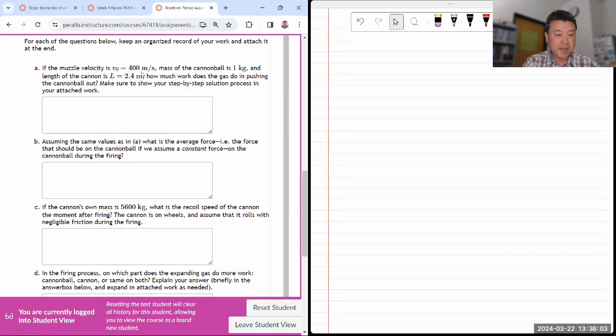If the muzzle velocity is V-naught, mass is M, length is L, how much work does the gas do in pushing the cannonball out? Here, I think you have to recognize that length is actually redundant or superfluous information. You don't need it. So when it asks how much work, you have to use work kinetic energy theorem, which says that any change of kinetic energy comes from work done.